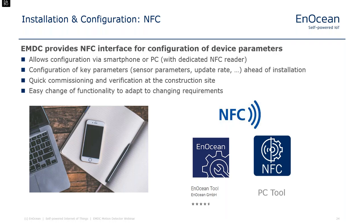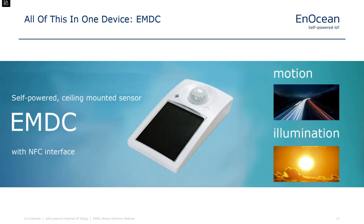You also need to be able to set up the device according to your needs — telling the receiver the sensor ID, type and security key. This configuration process is a key cost-saving opportunity, as time spent configuring devices on a construction site directly impacts revenue. Therefore in our latest generation products we use an NFC interface that can be easily configured using a dedicated smartphone application or a PC tool. This allows installers to use a smartphone on-site, and partners to use a PC tool during manufacturing. All functionality — motion detection, illumination measurement and NFC configuration — is integrated in EMDC, a self-powered ceiling-mount device.